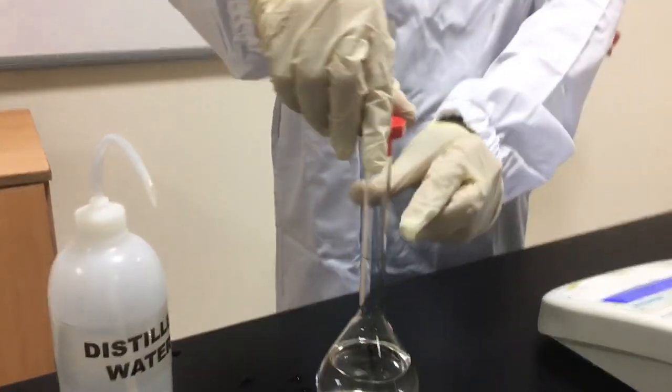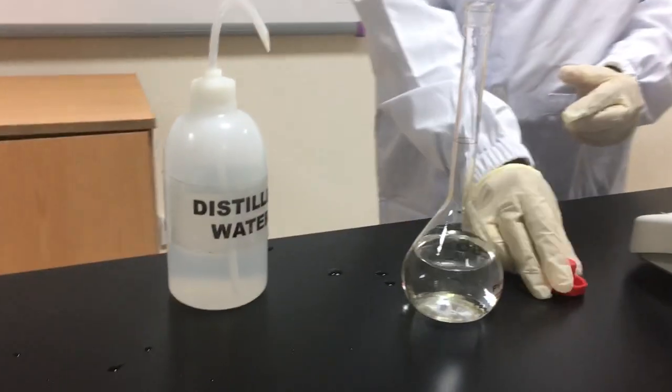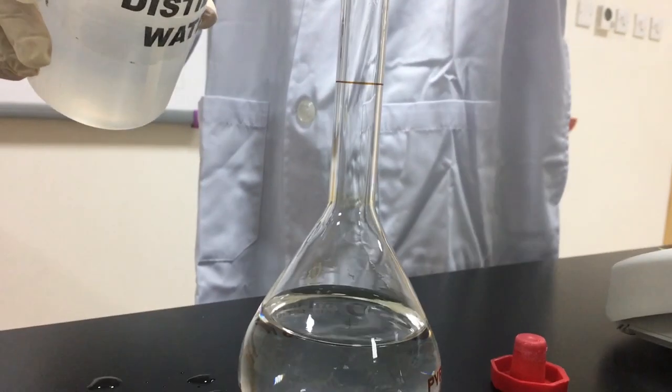When you are sure that the whole quantity of sugar is dissolved, add water to reach the neck of the volumetric flask.